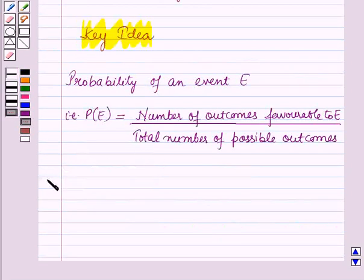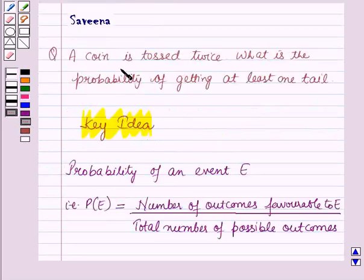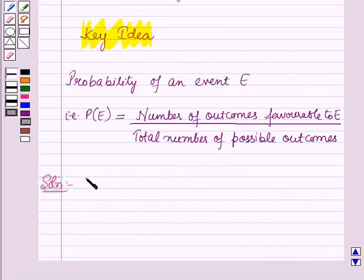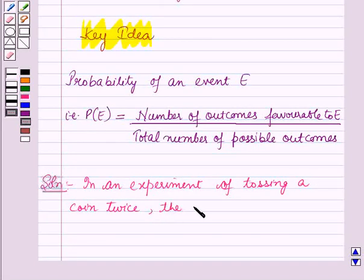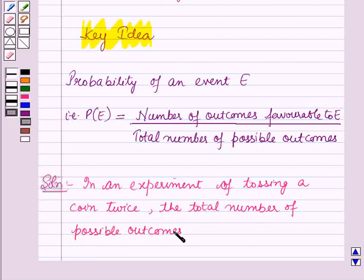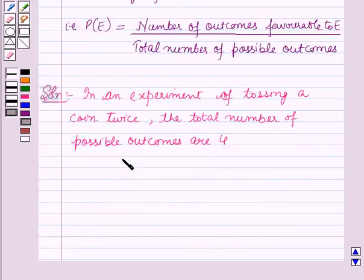Now we will start with the solution. It is given that a coin is tossed twice. In an experiment of tossing a coin twice, the total number of possible outcomes are four. That is: head-head, head-tail, tail-head, and tail-tail.